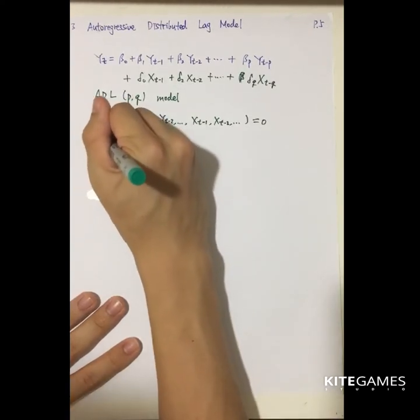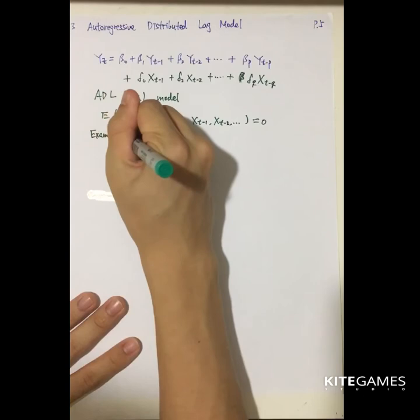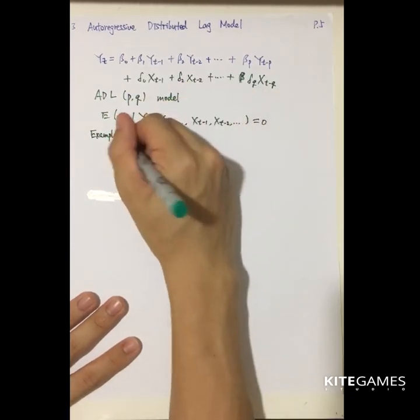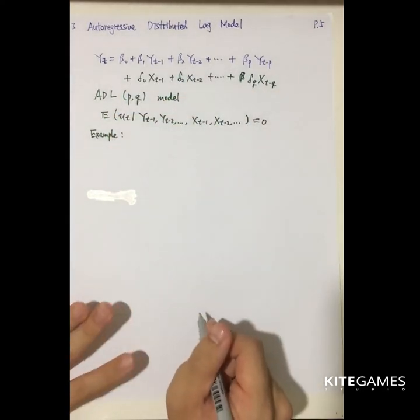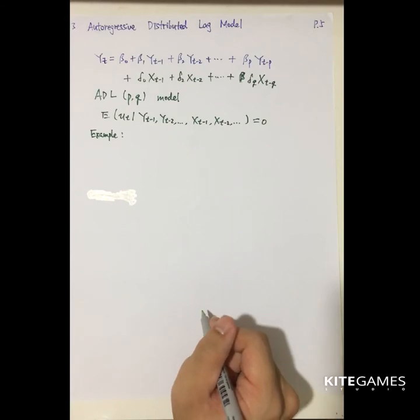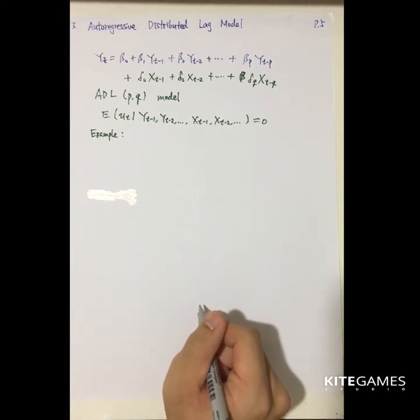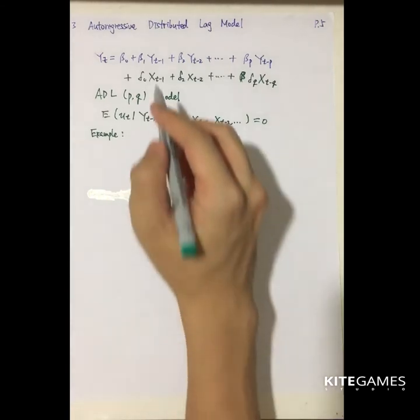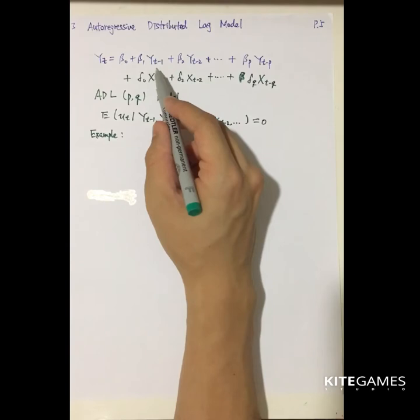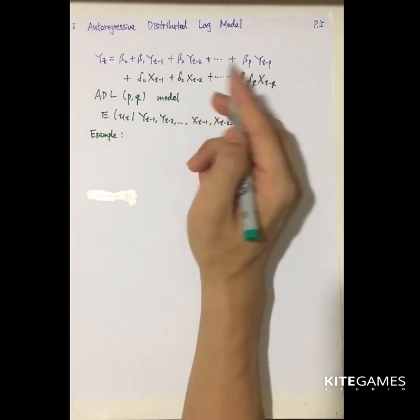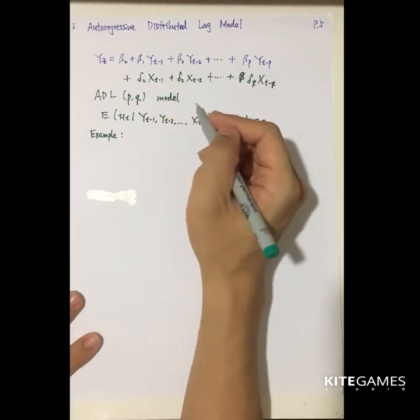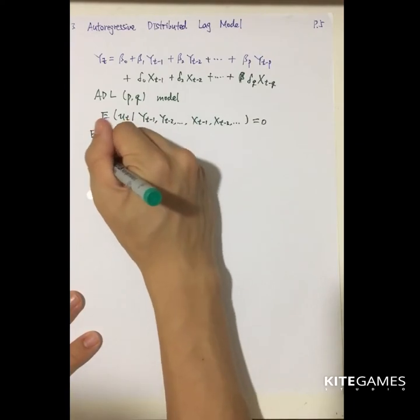So there are many examples, maybe in the Phillips curves. The Phillips curve is a negative relation between the unemployment rate and inflation rate, but some economists will also think that the inflation rate is the function of the inflation rate in the past few periods.